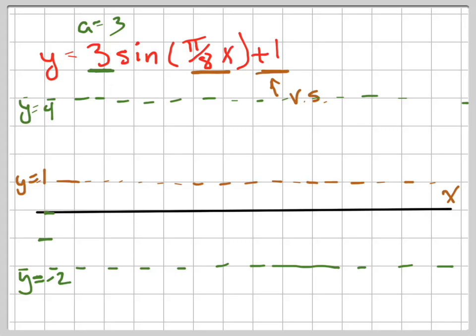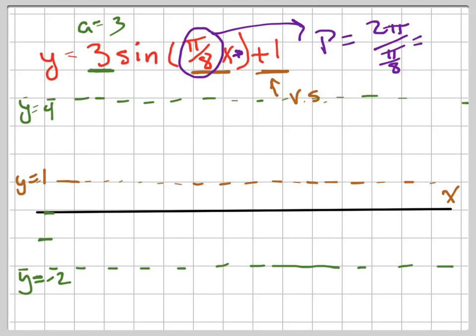There's no horizontal shift, because there's no plus or minus inside here. So all I have to do is figure out the period. The period equals 2 pi over pi over 8. How do I divide by pi over 8? I multiply by 8 over pi. The pi's cancel, and my period is 16.